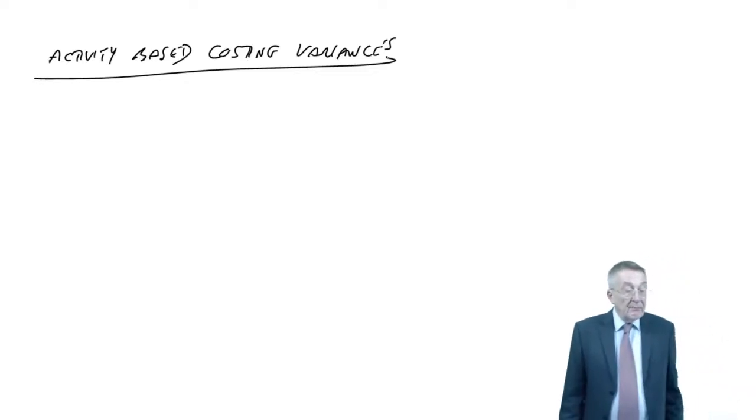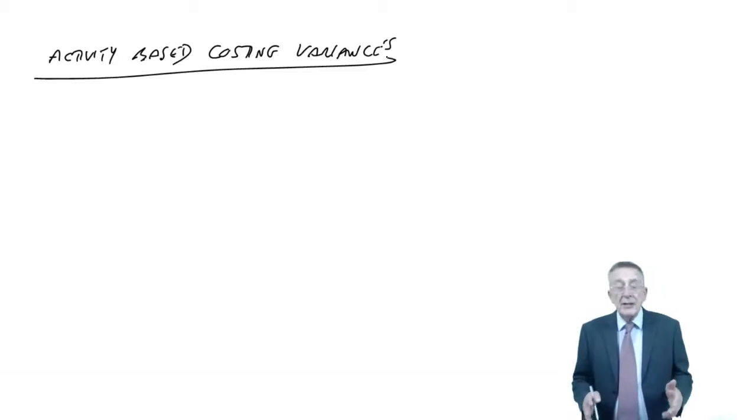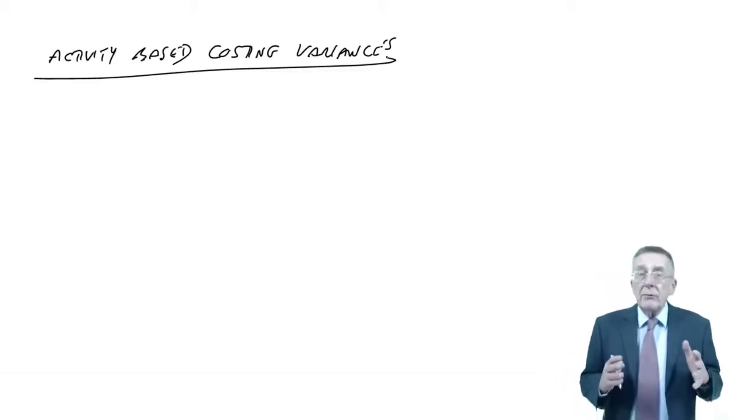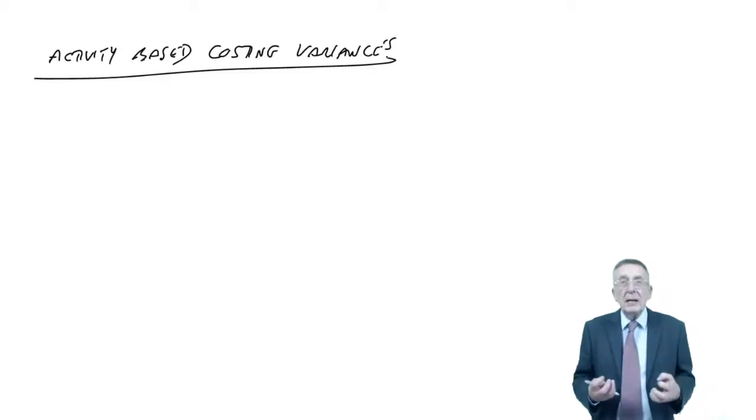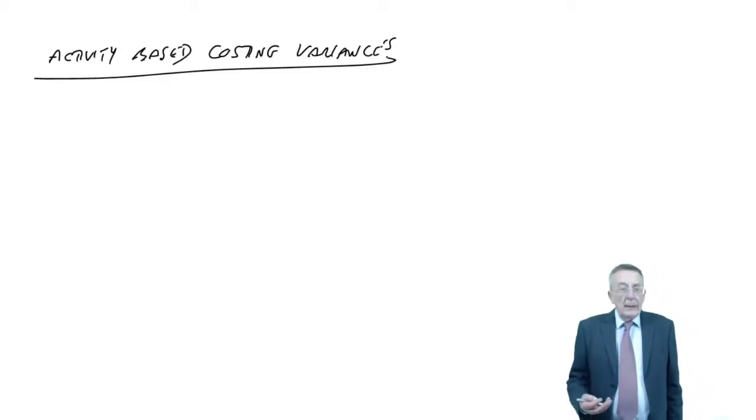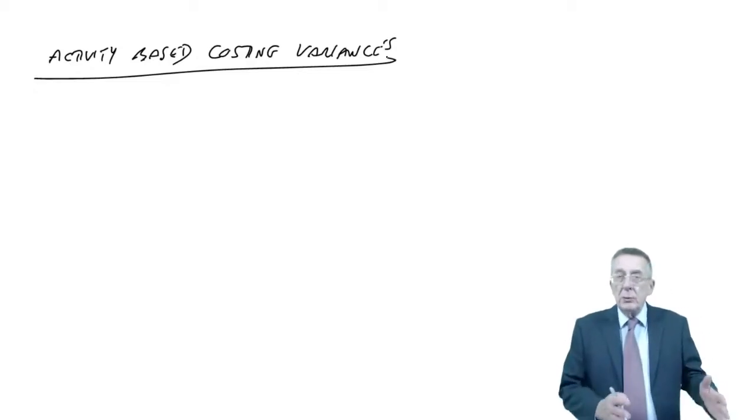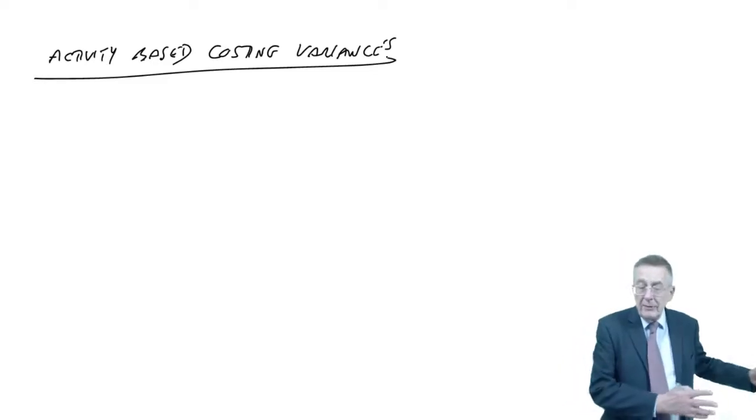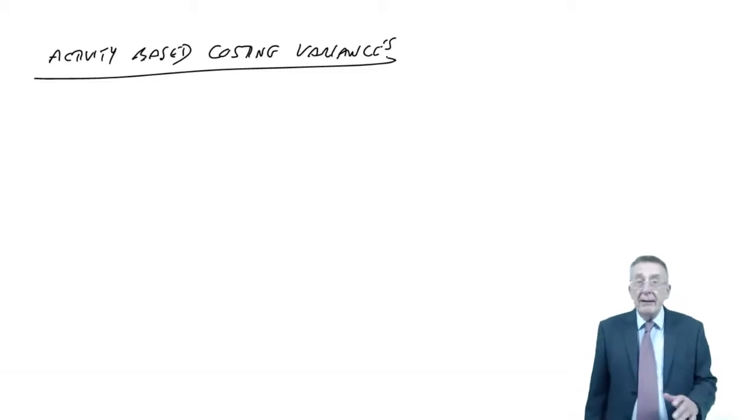Before we look at example six, I actually wondered whether to bother lecturing this, because I honestly think the reason the examiner did put it in once, quite a long time ago, I really think it was to check that you really understood what variances were, what we were doing, as opposed to just learning rules. Because if you understand why we do what we do, everything we've done previously, then you don't really need extra rules. For example six, it's actually very, very easy.